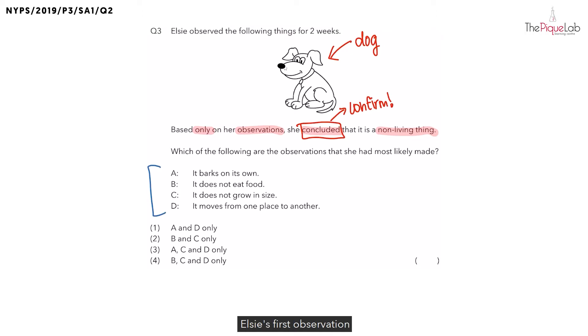Elsie's first observation is that the dog barks on its own. Now, let's consider two scenarios. If this dog here is a living dog, will it be able to bark on its own? The answer would definitely be yes. But now, what if this is a toy dog?